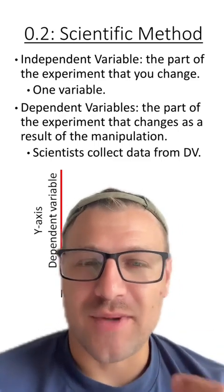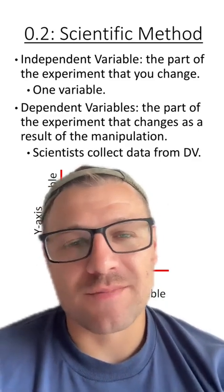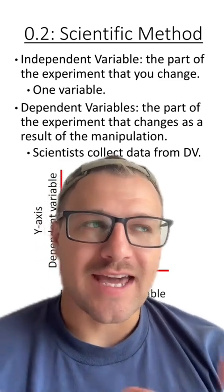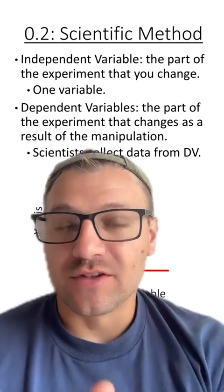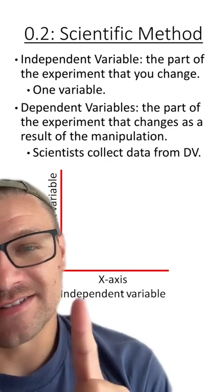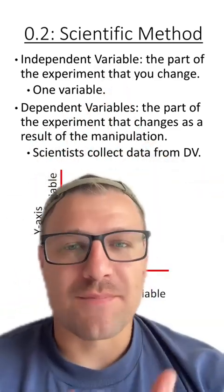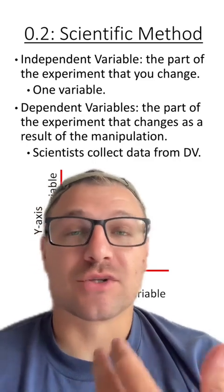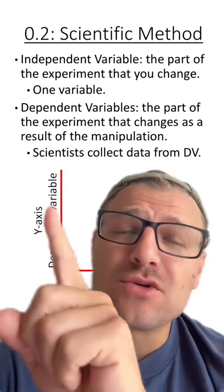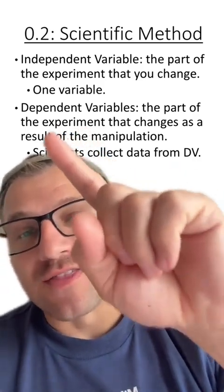In these scientific experiments, we have things called the independent and dependent variables. An independent variable is the part of the experiment that you change. This is typically only one variable, since we're trying to see how a single variable influences another. Typically on a graph, the independent variable is on the x-axis. The dependent variable depends on the independent variable. This is the part of the experiment that changes as a result of the manipulation. Specifically, this is the one that scientists take data from, and it's usually found on the y-axis.